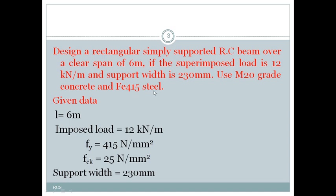The beam is rectangular, supported over two simple supports — a simply supported beam. The span given is a clear span, not effective span. Based on the clear span we calculate the effective span. The imposed load is live load; from the self weight we calculate dead load. Superimposed load is 12 kN/m, support width is 230 mm. We use M20 grade concrete and Fe415 grade steel.